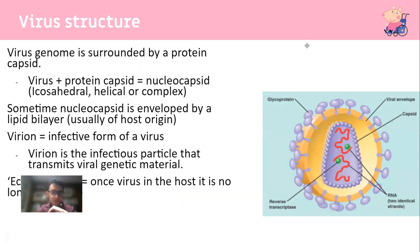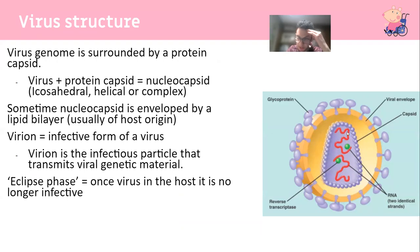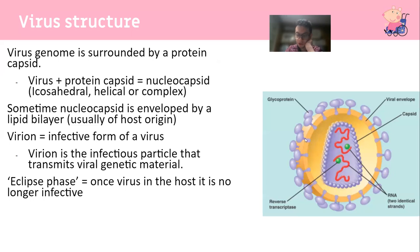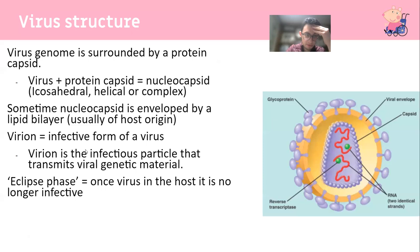The virus genome - which can be RNA or DNA - is surrounded by a protein capsid for protection and structure. When it fuses with the cell membrane and enters the nucleus, the protein complex will collapse and the DNA will be transcribed. The virus genome and protein capsid together form a nucleocapsid, which can be icosahedral, helical, or complex in shape. Sometimes this nucleocapsid is enveloped by a lipid bilayer, usually of host cell origin. These nucleocapsids will bud off and take some of the cell membrane with them, which may lead to lysis of the cell.